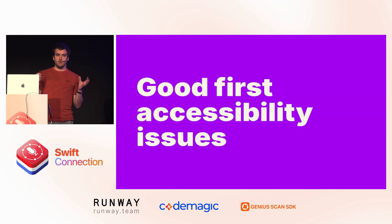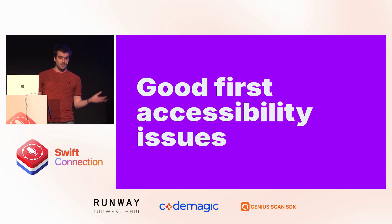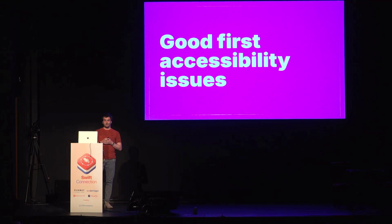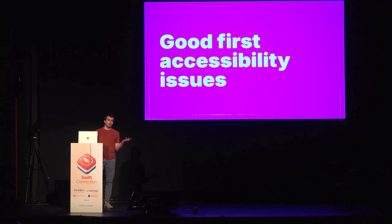Now when we talk about building an accessibility culture, this goes beyond testing and adding accessibility — you actually want to get more people on board. One of the things we've done is creating good first accessibility issues that any new team members, or people from other teams interested in diving into accessibility, can pick up. Ideally these would not be major issues your users have to deal with, but they can be a great way to get somebody on board and give them a great first ticket that doesn't leave them hanging.